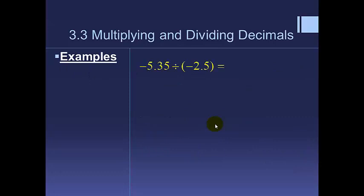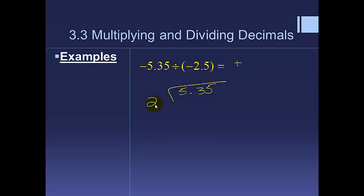Here's an example with negatives: negative divided by a negative is a positive — sleeping integer man confirms that. Set that sign aside. We have 5.35 divided by 2.5. To eliminate the decimal in 2.5, move it one place to the right — move both decimals one place — giving 53.5 ÷ 25. We'll rewrite it and continue from there.